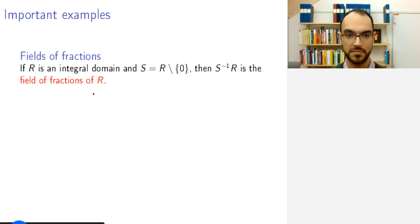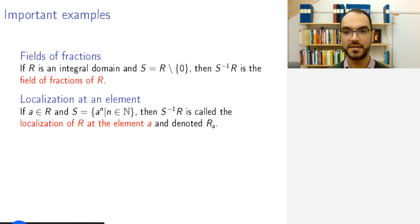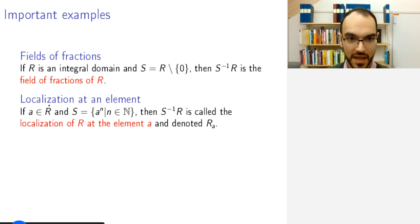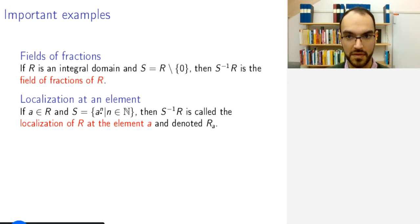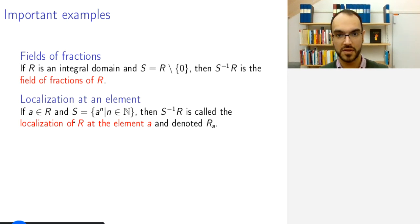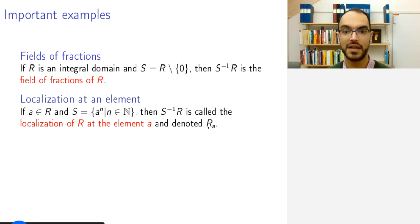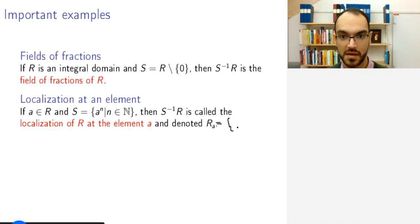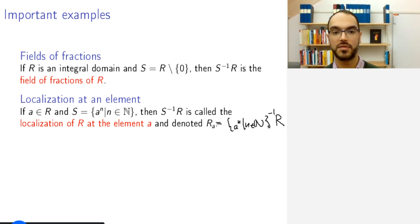There are some other important examples. You can localize at an element: given an element A in R, you consider all powers of A — all positive powers and the unity — to form a multiplicatively closed set. The name for this is the localization of R at the element A, denoted R sub A. So R_A is simply the localization with respect to that set of powers of A.